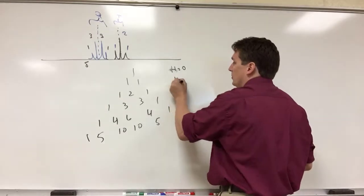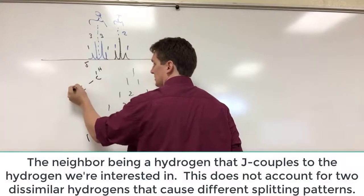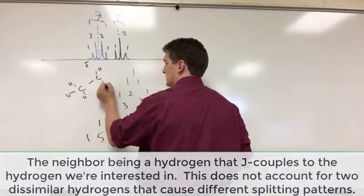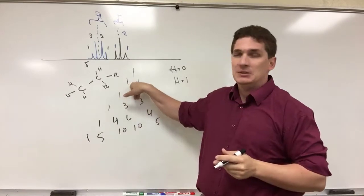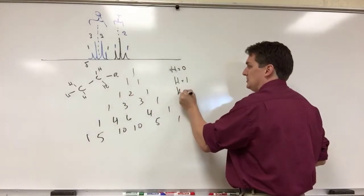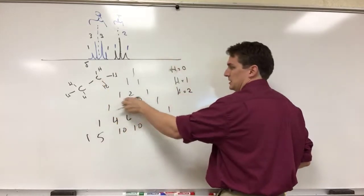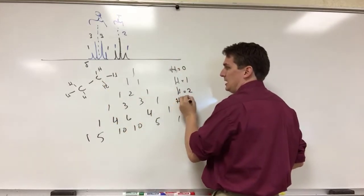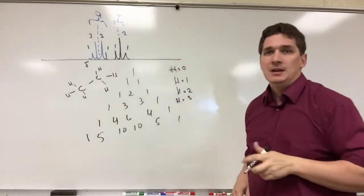If we have one neighboring hydrogen, so in this case, something that looked like this, these three would be split into a doublet. If we have two neighboring hydrogens, we would get our triplet. Three neighboring hydrogens, we'd get our quartet.